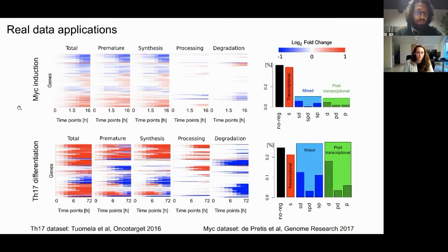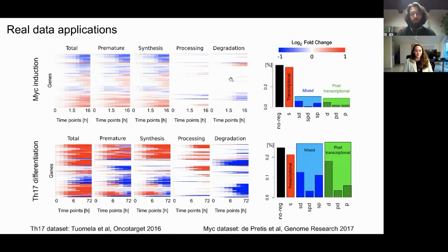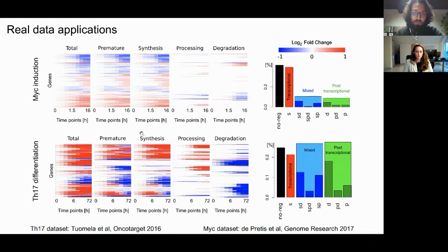We applied our tool to several datasets. The first is a dataset collected after MYC activation in murine fibroblasts. Here we show the log2 fold change of RNA species and the inferred kinetic rates — synthesis, processing, and degradation. MYC is a transcription factor, so we expected strong regulation of the synthesis rate, and this is indeed the outcome. The situation is very different for Th17 differentiation, where the biological stimulus is much more complex and requires strong regulation also of post-transcriptional rates, as seen in the heat maps and bar plots.